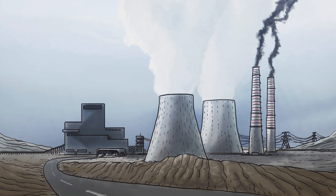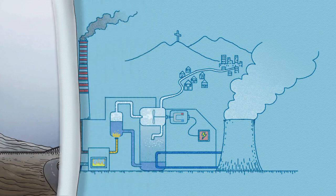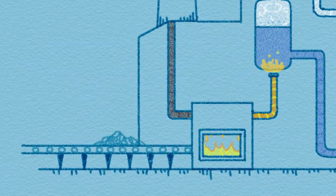When the lignite arrives at the station, the process of energy production begins. First, it goes into a furnace burner where it is burnt.